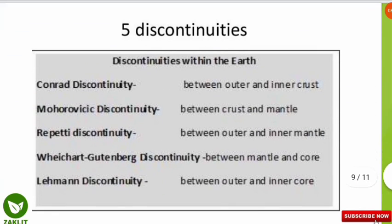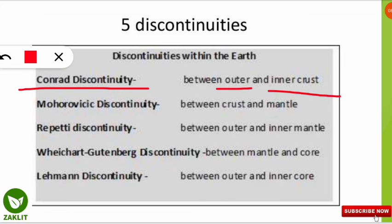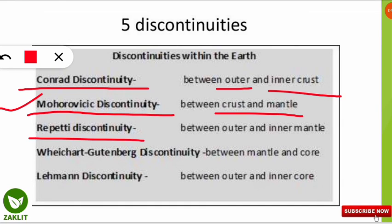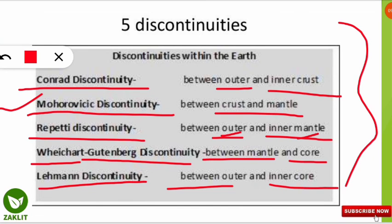Now the most important topic — discontinuities — which is asked in many examinations including environmental science, geography, and state exams. There are five important discontinuities: (1) Conrad discontinuity — between the outer and inner crust; (2) Mohorovicic discontinuity, also called Moho discontinuity — between the crust and the mantle; (3) Repetti discontinuity — between the outer and inner mantle; (4) Gutenberg discontinuity, also called Wiechert-Gutenberg discontinuity — between the lower mantle and the core; (5) Lehmann discontinuity — between the outer and inner core. You should make a table of these.